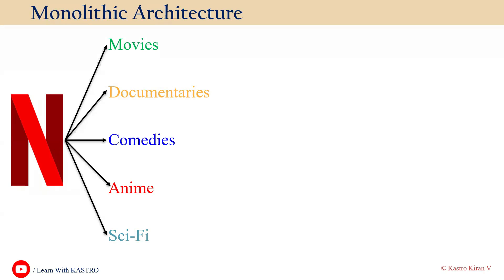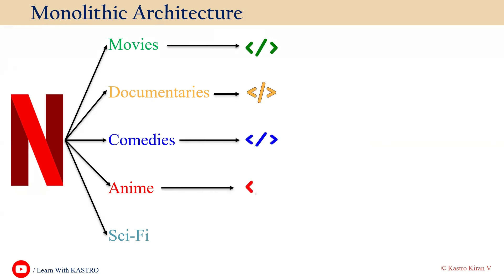On a large scale, for each category there is a separate set of code written by developers. As a DevOps engineer, we take the complete code of the application and deploy it into a server. One thing to understand is that all the code for all categories — movies, documentaries, comedies, animations, and sci-fi — is kept in a single server or single instance.